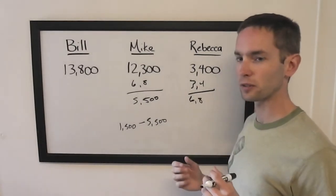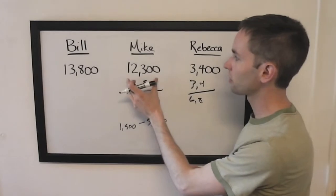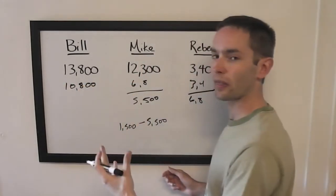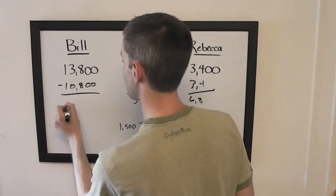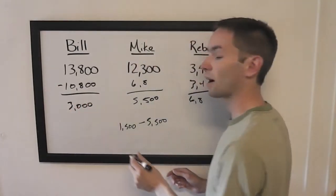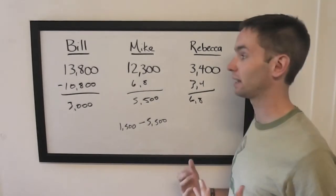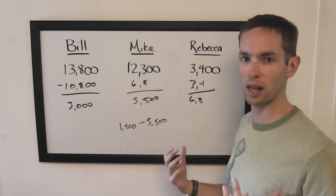Now why is this a strong situation? Well, if Bill wagers to lock Mike out, he'd have to wager 10,800. If he gets it wrong, he's going to be left with 3,000, which is less than what Rebecca went into final with.